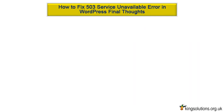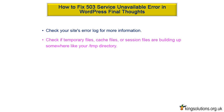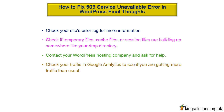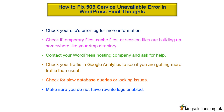If the 503 service unavailable error was not caused by a WordPress plugin or WordPress theme, then take the following actions: Check your site's error log for more information. Check if temporary files, cache files, or session files are building up somewhere like your TMP directory. Contact your WordPress hosting company and ask for help — their tech support may be able to pinpoint the cause. Check your traffic in Google Analytics to see if you are getting more traffic than usual. Do not automatically assume the problem is a lack of system resources, as it is rarely the case. Check for slow database queries or locking issues, and make sure you do not have rewrite logs enabled.